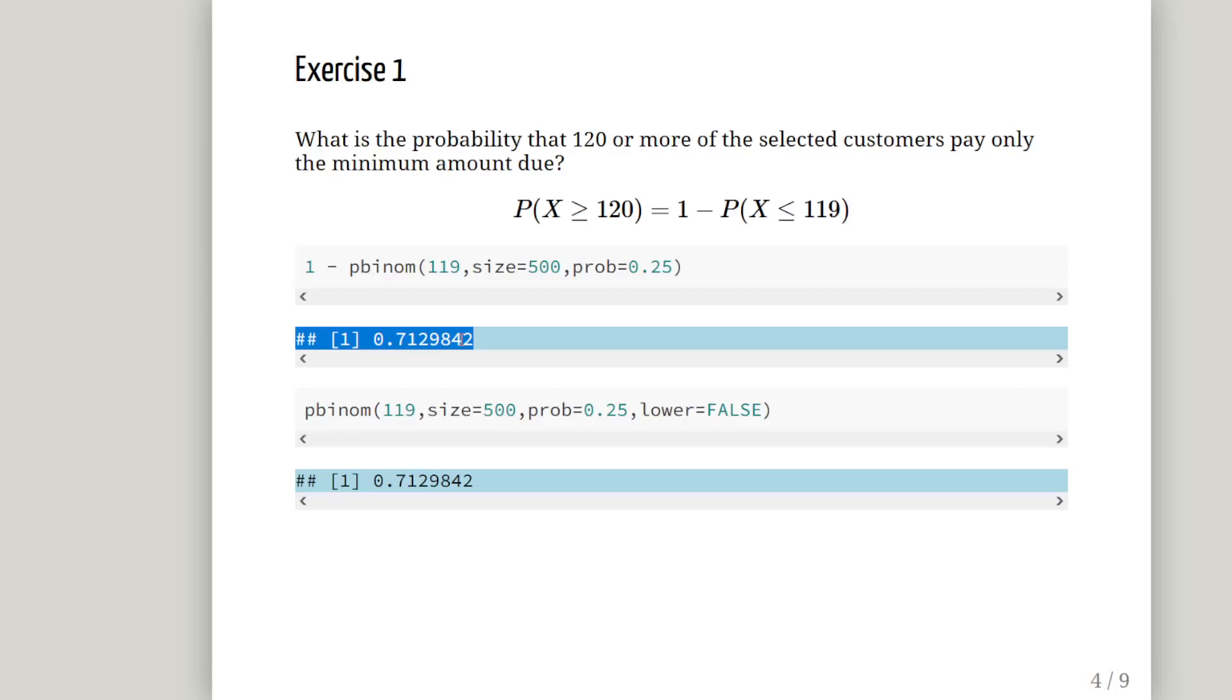So the probability of that is 0.7128. We can find the corresponding values by looking at pbinom 119 size equals 500 and the probability equals 0.25 and add in lower equals FALSE. That calculates essentially the complementary probability. That calculates the probability of X greater than 119 but not including 119 in that set of sample points. So that's the probability of X greater than 119 but that doesn't include 119 in that interval.